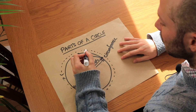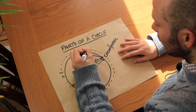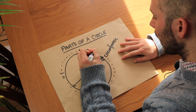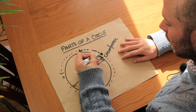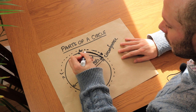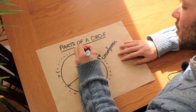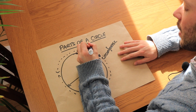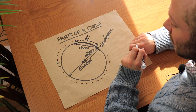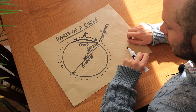If we have some portion of the circumference of the circle — just this part of the circumference here — that is known as an arc of the circle. So an arc of the circle is just some portion of the circumference.